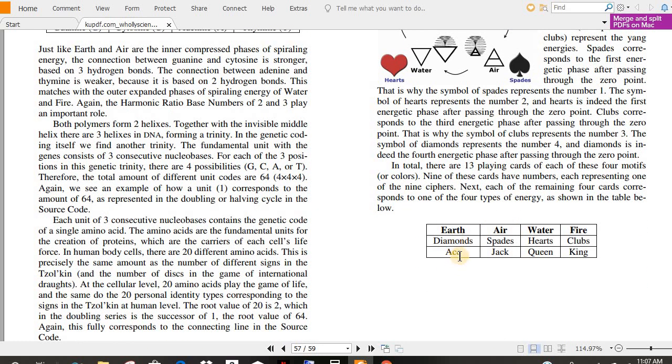In total, there are 13 playing cards of each of these four motifs of colors. Nine of these cards have numbers, each representing one of the nine ciphers. Next, each of the remaining four cards corresponds to one of the four types of energy, as shown in the table below. Diamonds, Ace, Earth, Air, Spades, Jack, Water, Queen's Heart, and Fire, Club's King.